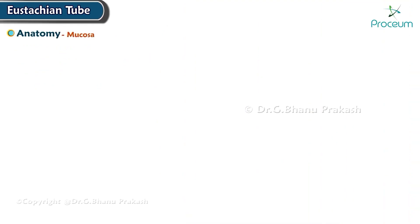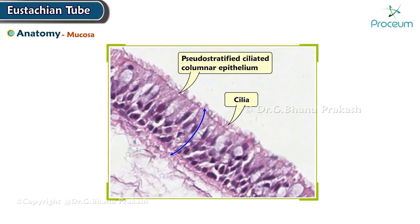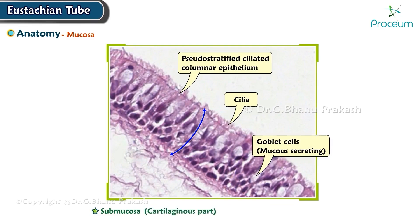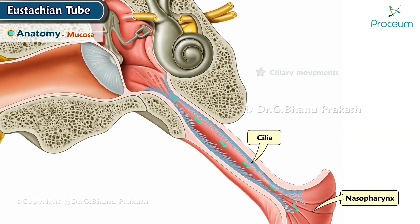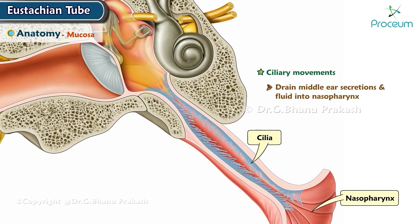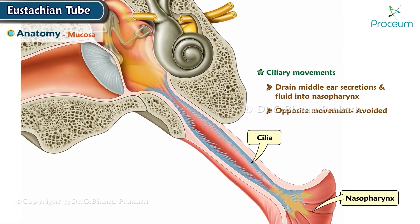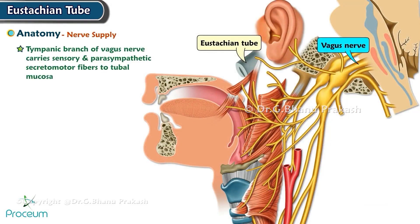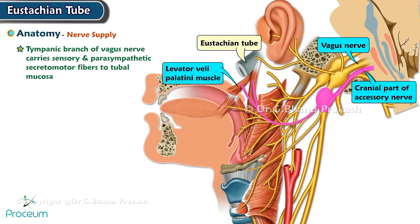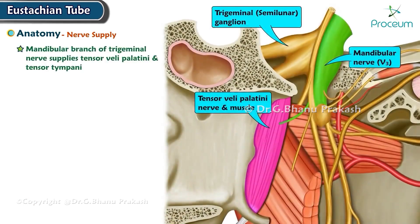Mucosa of the Eustachian tube. Histologically, the pseudostratified ciliated columnar epithelium is interspersed with mucus-secreting goblet cells, especially in the nasopharyngeal region. Nerve supply: the tympanic branch of the vagus nerve carries sensory and parasympathetic secretomotor fibers to the tubal mucosa. The cranial part of the spinal accessory nerve, through the vagus, supplies levator veli palatini and salpingopharyngeus. The mandibular branch of the trigeminal nerve supplies tensor veli palatini and tensor tympani.